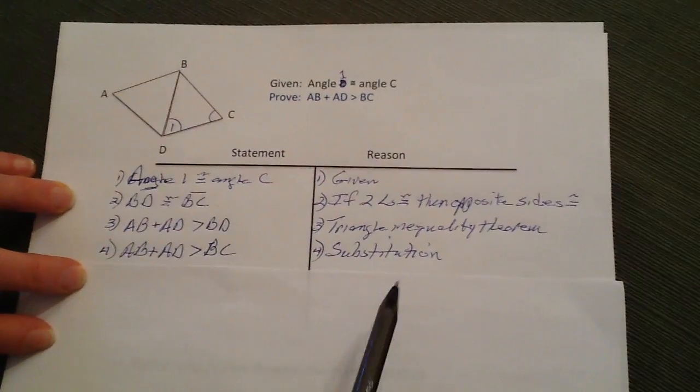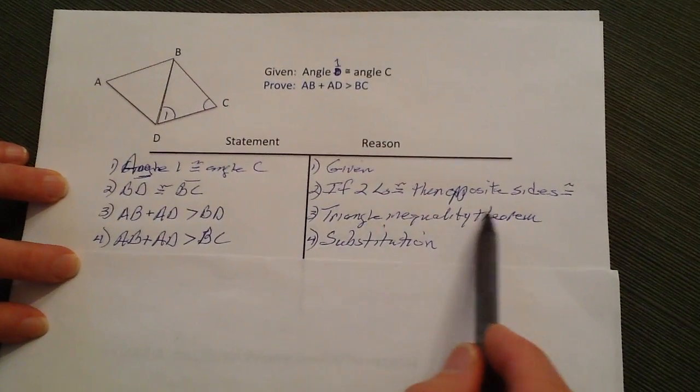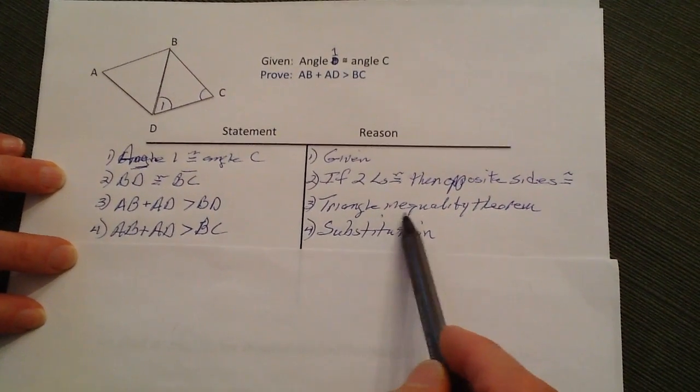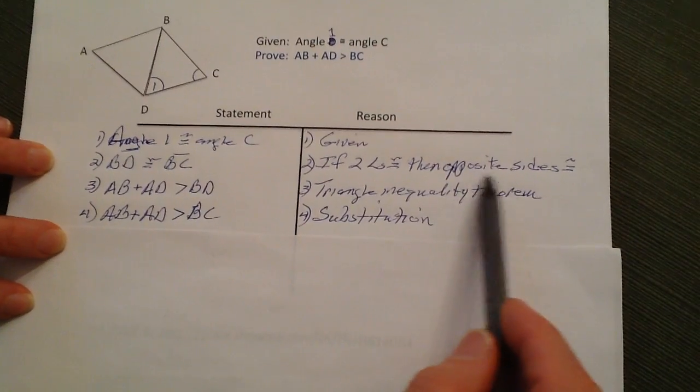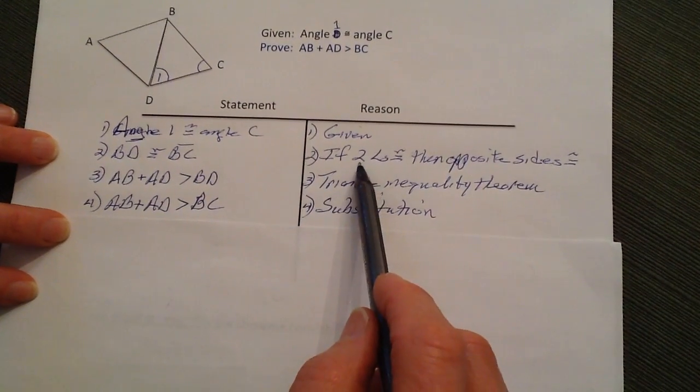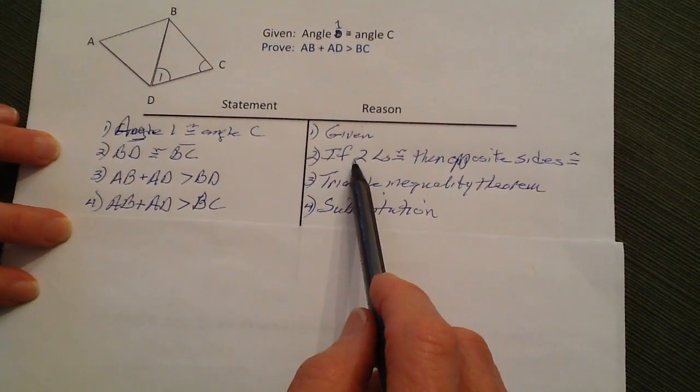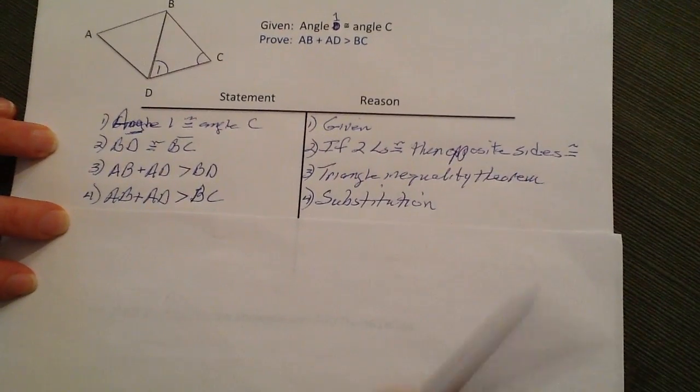And the essential reason for using this proof is to allow us to use the triangle inequality theorem and also to use where, in this case, if you have opposite angles that are equal, then the opposite sides have to be equal.